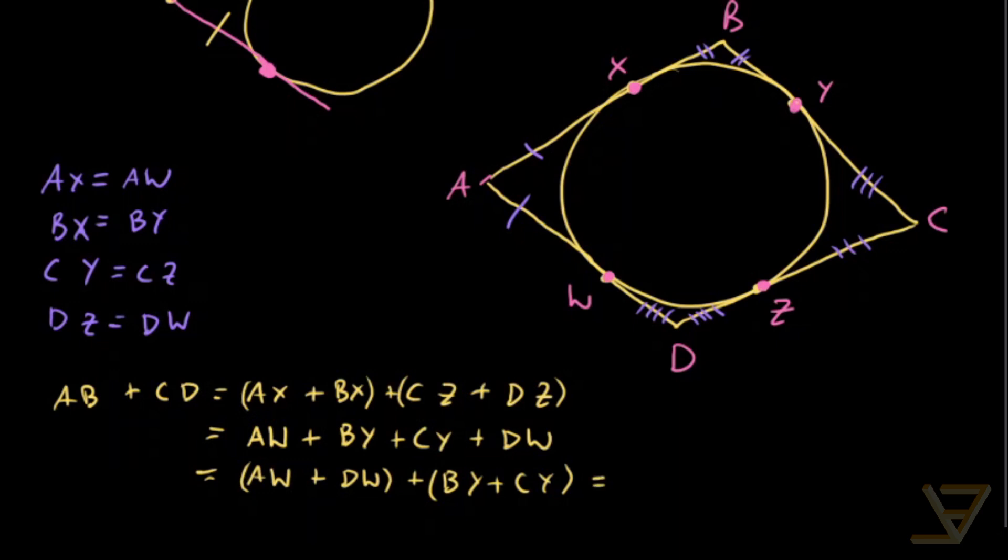And that is equal to, when we put AW plus DW together, we get AD. And BY and CY, when we put it together, we get BC. So that means we have that AB plus CD is equal to AD plus BC. And that's Pitot's theorem.